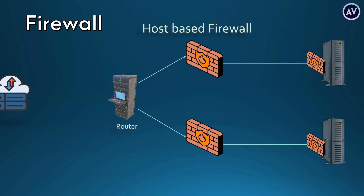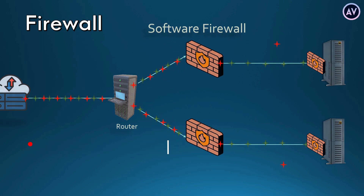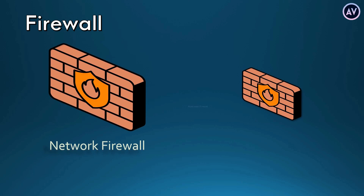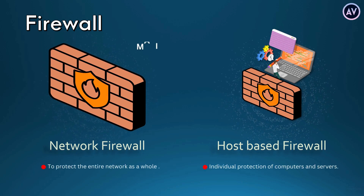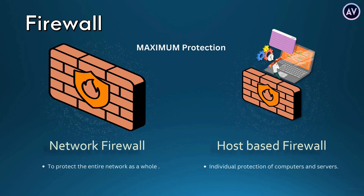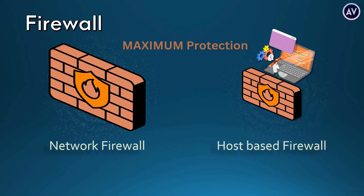Essentially, host-based firewalls are placed to protect machines locally, in case network firewalls allow malicious payloads. A lot of organizations will use both network-based and host-based firewalls — network-based firewalls to protect the entire network as a whole, and host-based firewalls for individual protection of computers and servers. By doing this, it ensures maximum protection, because if harmful data gets past the network firewall, the host-based firewall on each computer will be there to stop it.